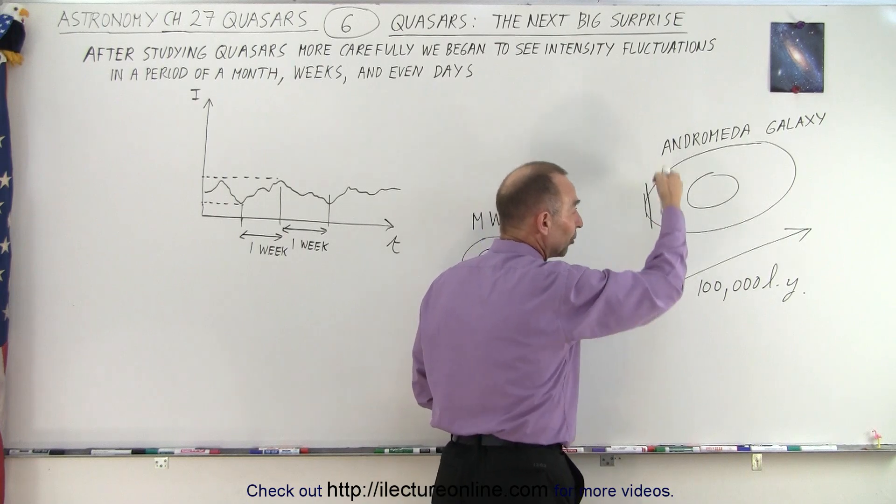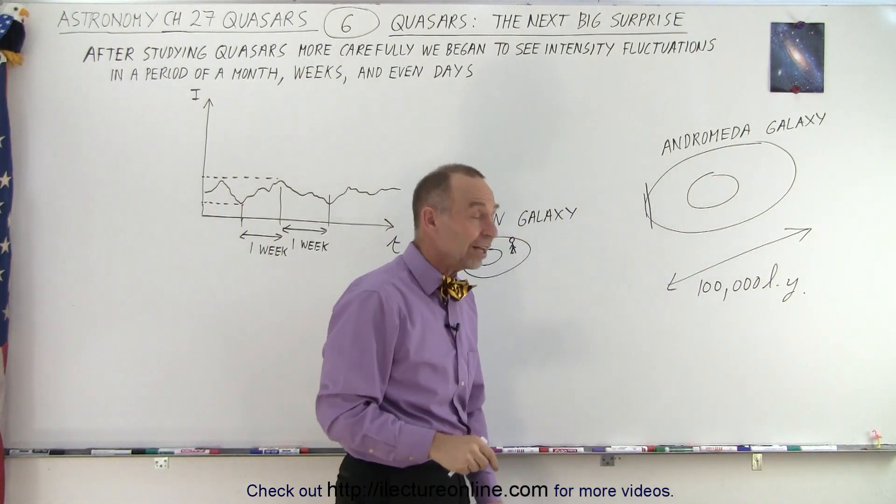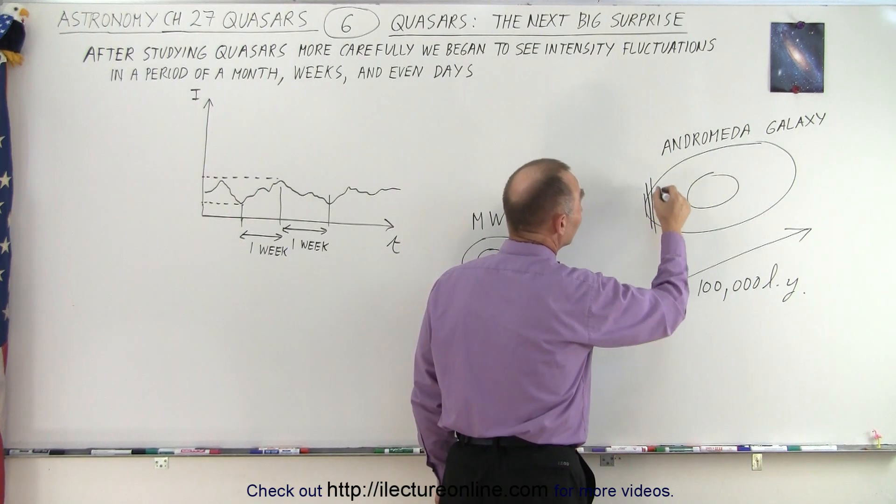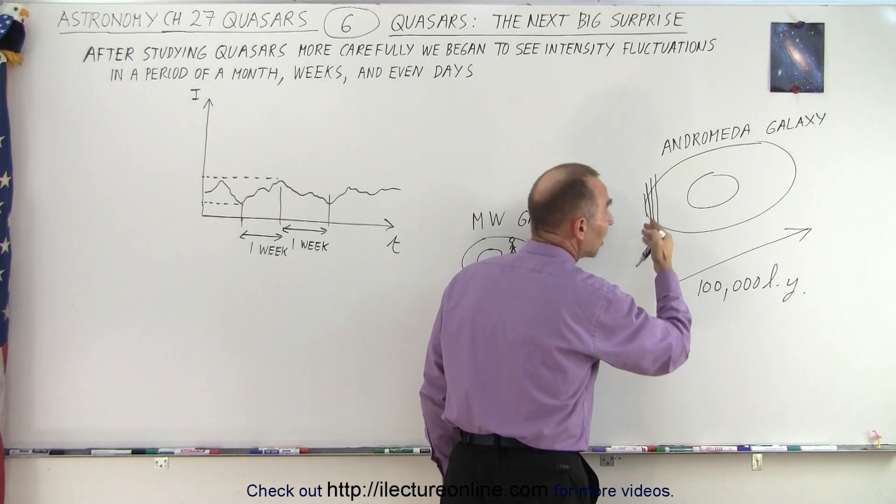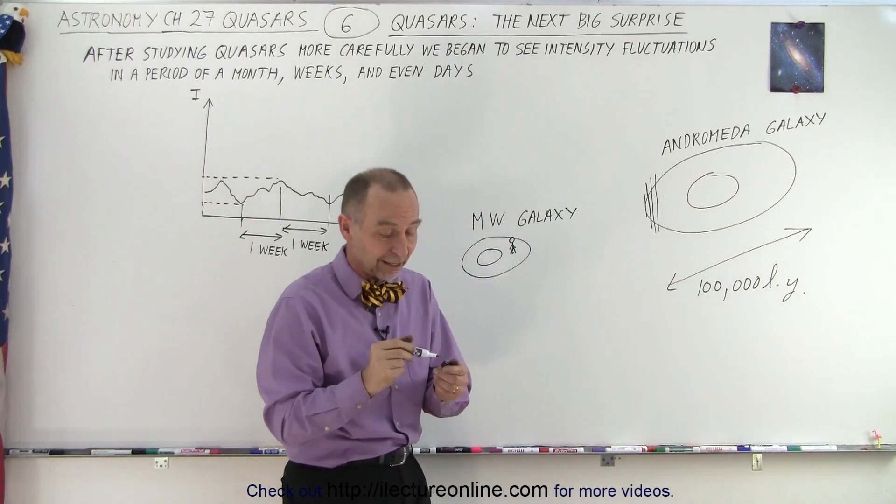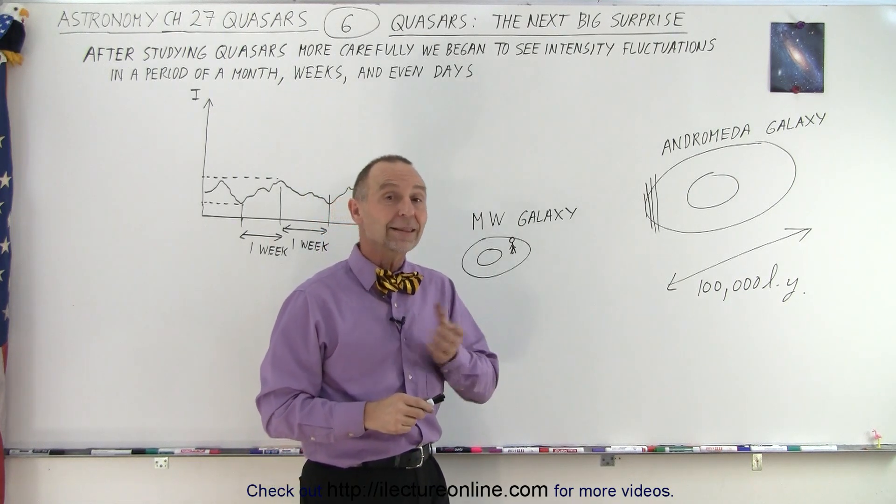And then imagine there would be a hundred of these 1,000-year slices, so every 1,000 years we'd see a little bit less of the galaxy, a little bit less of the galaxy. It would take thousands of years before we begin to see a significant bite out of the galaxy. Thousands of years, not a week, not a month, not days.